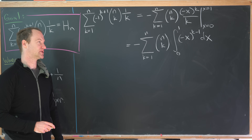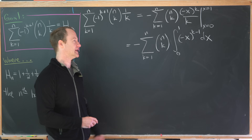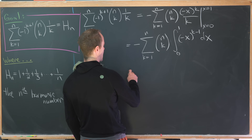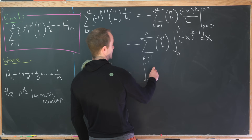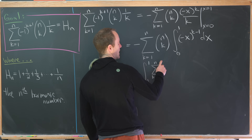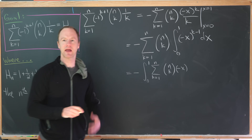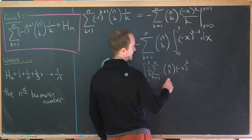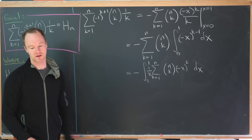Since we have a finite sum, we can exchange the order of summation and integration. Rewriting, this becomes minus the integral from 0 to 1 of the sum as k goes from 1 to n of n choose k times (-x)^k, all multiplied by 1/x, dx — writing (-x)^(k-1) as (-x)^k over x.